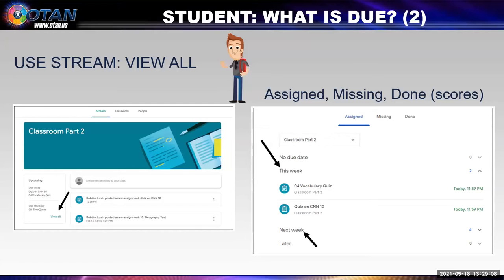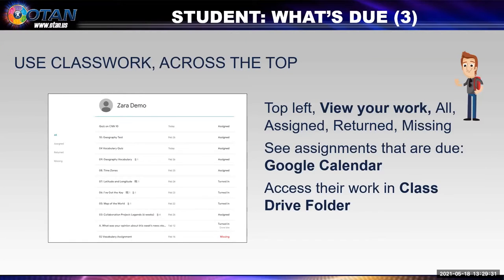Students can also find out what is due in stream. When they click the 'view all' link, they will open a screen where they'll see assigned work, missing work, and done work, and will be able to see their scores. Classwork also displays student assignments to do — if at the top left they click on 'view your work,' they'll see a menu which includes all assignments, returned, and missing. There are like three ways that all cross and they all work to get students to see what they need to do.